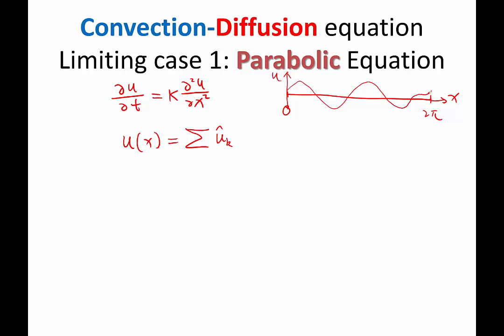then I can expand u(x) as a summation of u hat of k times a sinusoidal wave, which I can write as exponential of i kx. And this k is summed over from minus infinity to infinity. K is an integer, exactly. K summed over all possible integers.